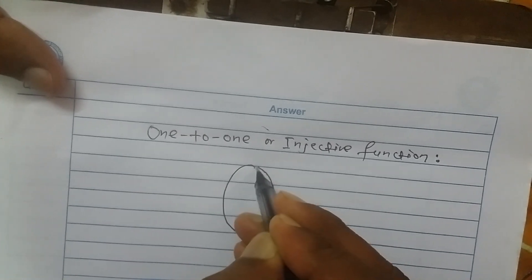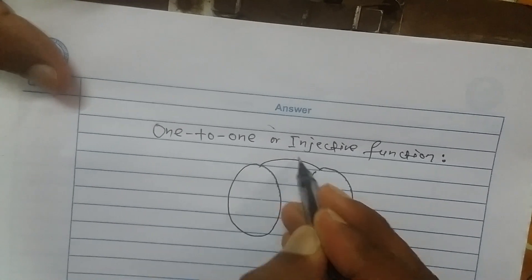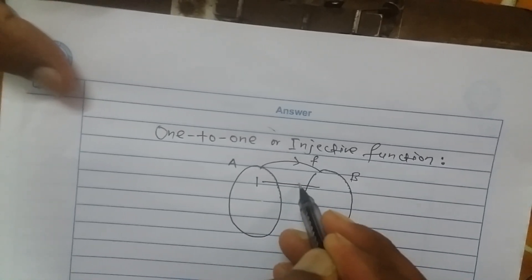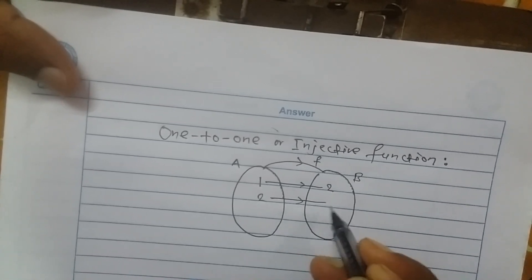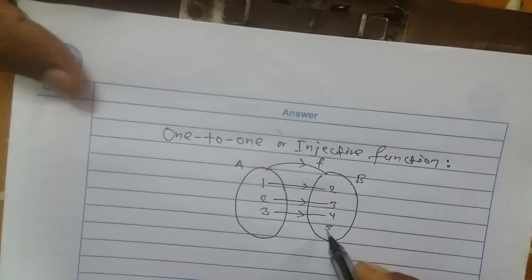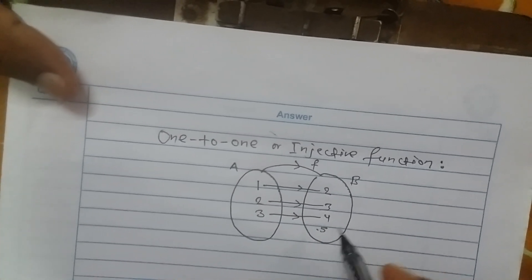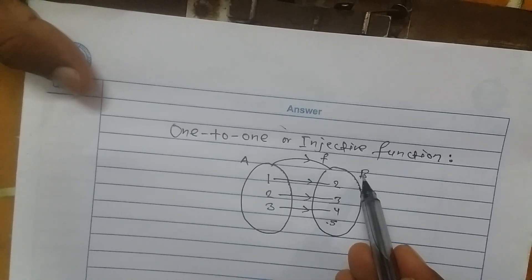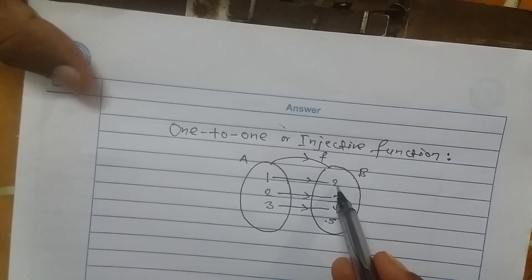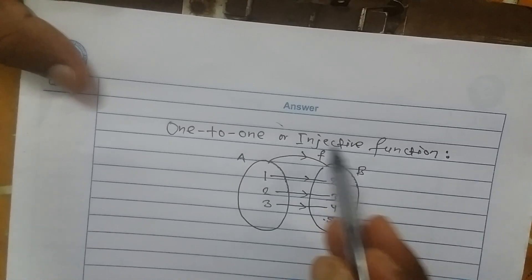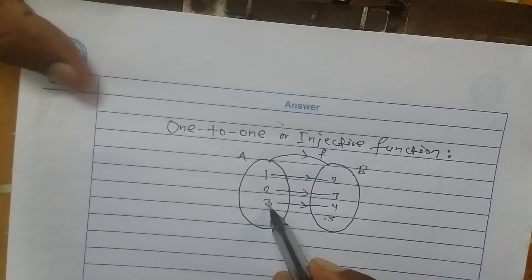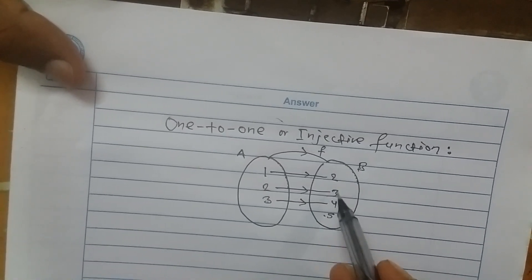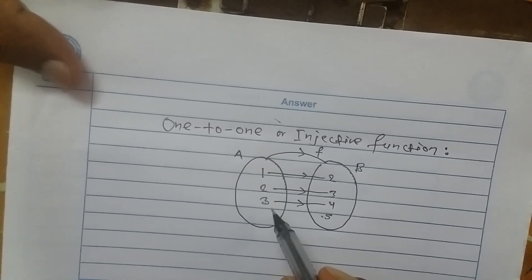I am going to draw a figure of a function here. Suppose it is a function f from set A to set B which maps 1 to 2, 2 to 3, 3 to 4, and there is one element 5 in set B. This function is 1-to-1 because set A is the domain set and set B is the co-domain set, and the set of elements 2, 3, and 4 is the range set. This function is 1-to-1 or injective because different elements of the domain set have different images in the range set.